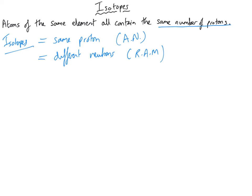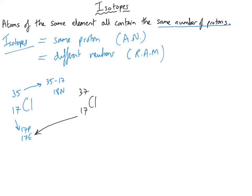The most common example is chlorine. Chlorine has an atomic number of 17, which means 17 protons and 17 electrons. It's got a relative atomic mass of 35, so 35 − 17 = 18 neutrons. But there is a second type of chlorine atom, which is a little bit heavier. It has a relative atomic mass of 37 but still an atomic number of 17 — so still 17 protons and 17 electrons, but 37 − 17 = 20 neutrons. So isotopes are atoms of the same element with the same number of protons, but a different number of neutrons.